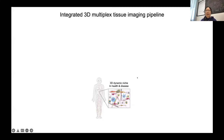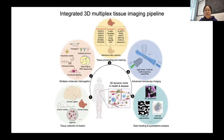We all know that tissue is a 3D dynamic niche in both health and disease, composed of different types of cells and involving a large number of molecules, including proteins, DNA, and RNA. To study the natural tissue environment, the 3D tissue imaging method based on tissue clearing is quite promising and informative compared to traditional 2D slides.